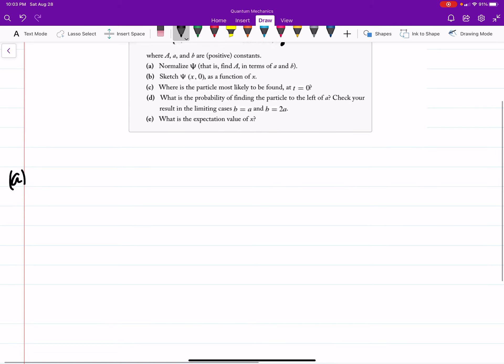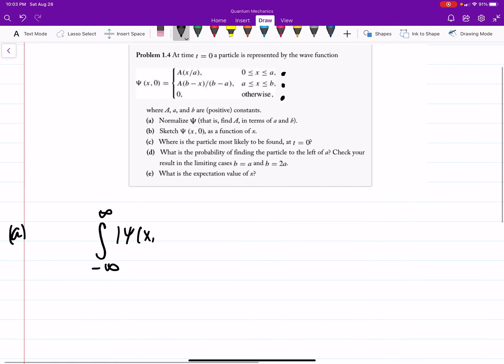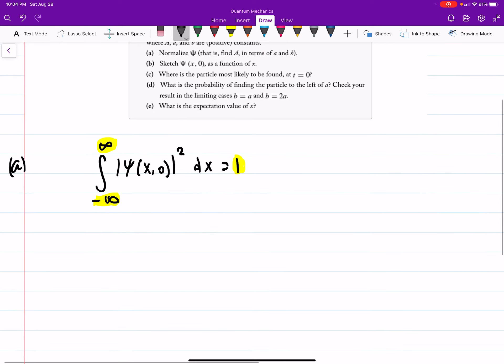So part A asks us to normalize the wave function and find big A in terms of little a and little b. The way that we're going to do this is we're going to integrate over all space, from negative infinity to infinity. The magnitude of our wave function, which is a function of x at time equals 0, squared dx equals 1. So essentially what this is saying is there's a 100% probability that we're going to find this particle somewhere. And the somewhere is coming from the fact that our integration limits here are from negative infinity to infinity. This is actually a probability density you could think of. But when we integrate over those limits, you're guaranteed to find the particle. Well, it must be somewhere, right? If you lose your keys or whatever, well, it didn't disappear in the ether. It's somewhere. So that's basically what this is saying.